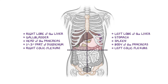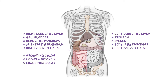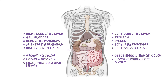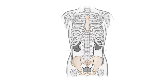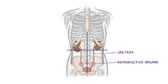In the right lower quadrant, there's the ascending colon, cecum, appendix, and the lower portion of the right kidney, while the left lower quadrant contains the descending and sigmoid colon and lower portion of the left kidney. Finally, remember that the lower quadrants are also home to the ureters, which carry urine from the kidney to the bladder, as well as the internal reproductive structures, which are different between sexes.